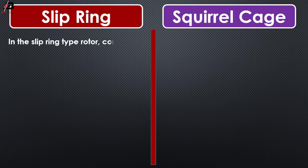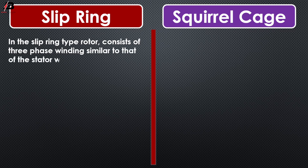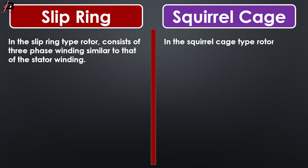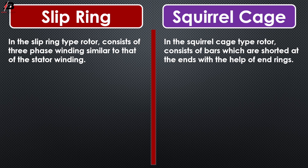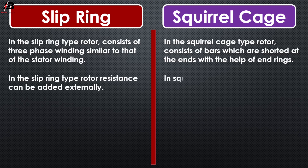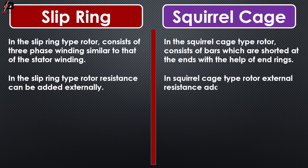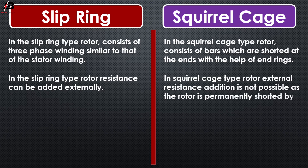Some simple differences between slip ring and squirrel cage rotor: in the slip ring type rotor, it consists of three-phase winding similar to that of the stator winding. In the squirrel cage type, the rotor consists of bars which are shorted at the end with the help of end rings. In slip ring type, resistance can be added externally; in squirrel cage type, external resistance addition is not possible as the rotor is permanently shorted by the end ring.